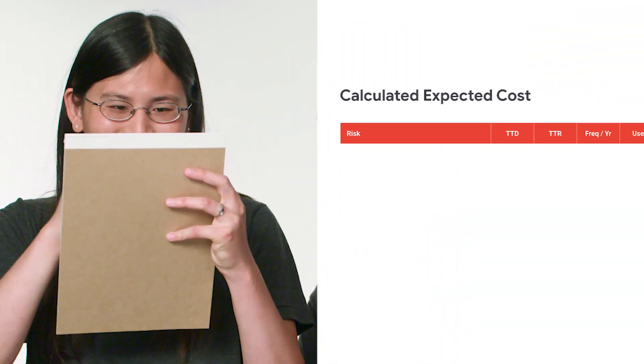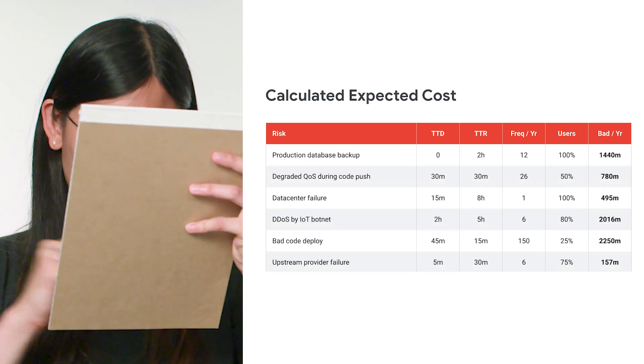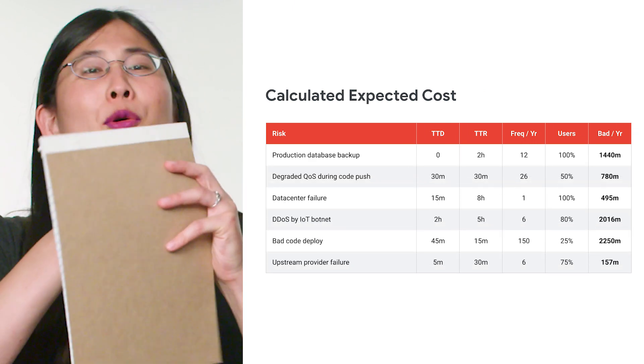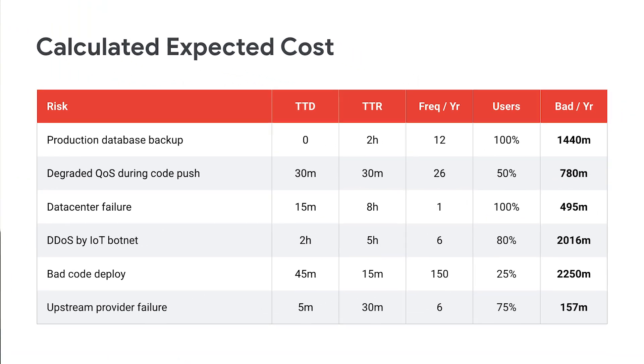So that makes a lot of sense. Great, so we can fill out these calculations together for any other sources of outages that you'd like to catalog. Now that you've compiled all of the risk data, we can sort the outages by the number of bad minutes per year. As we suspected, the monthly database outage is consuming the majority of your error budget.